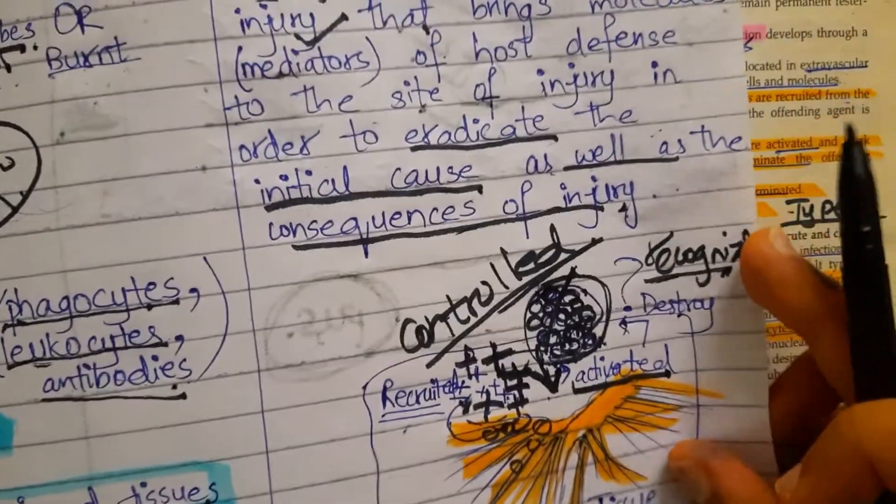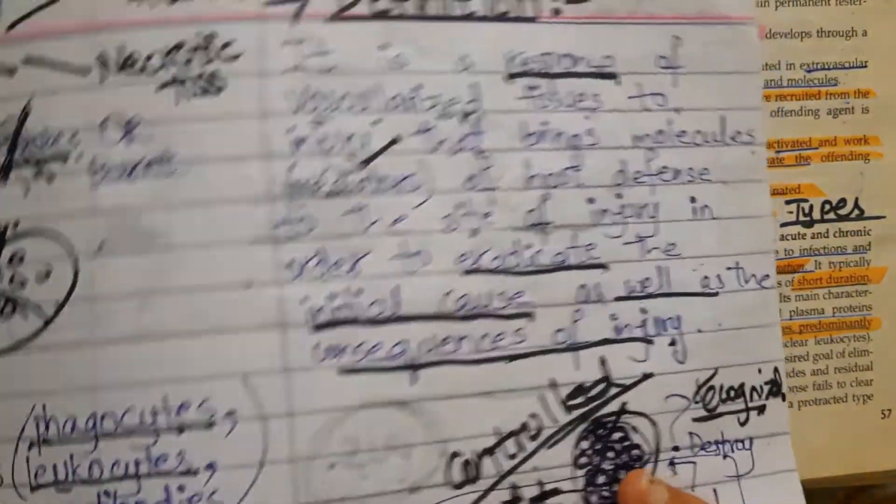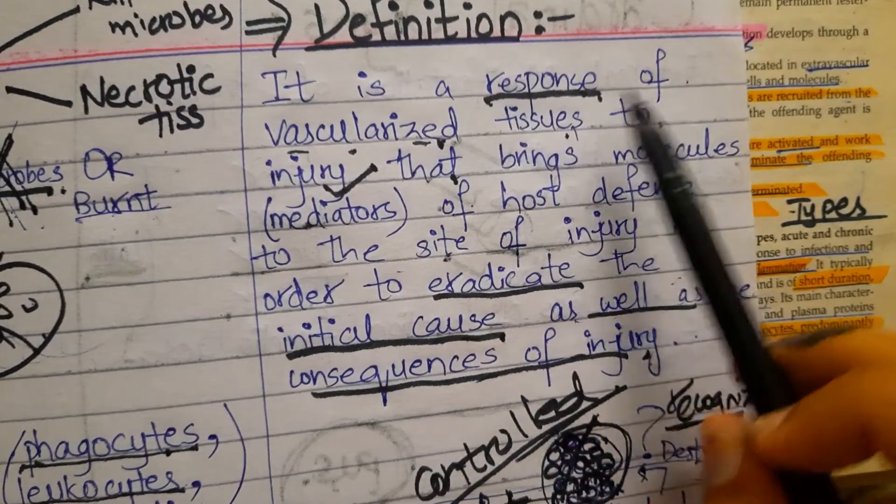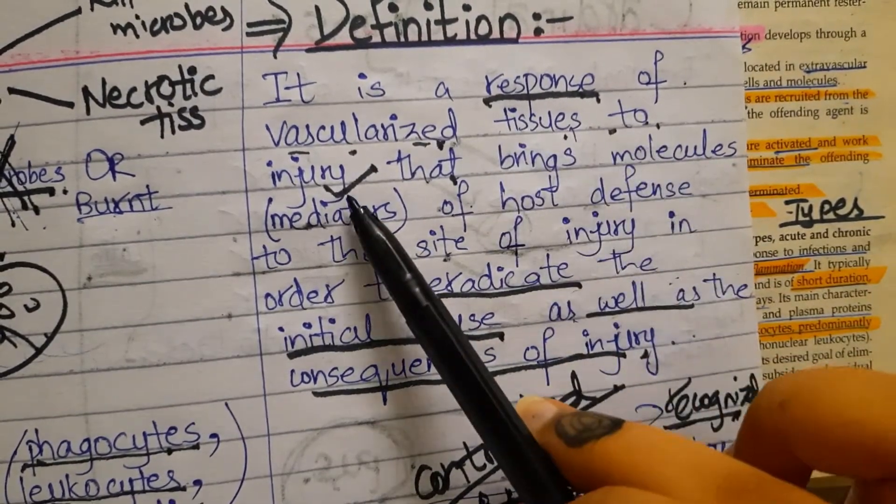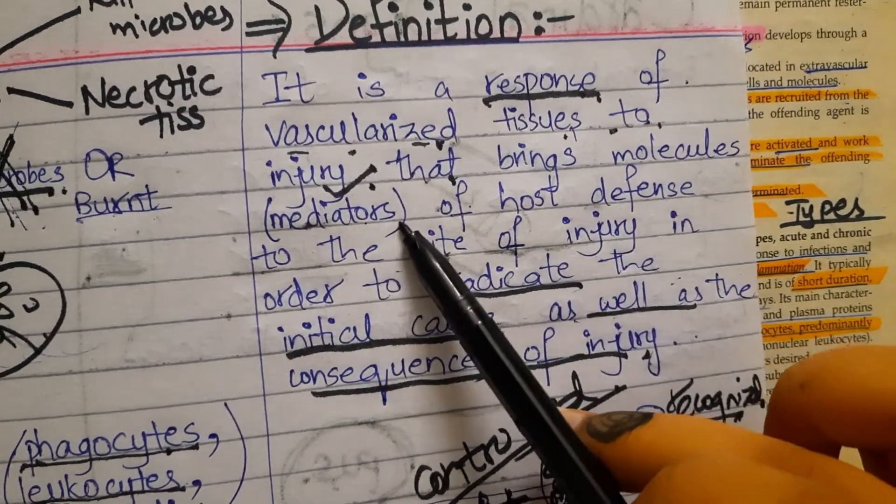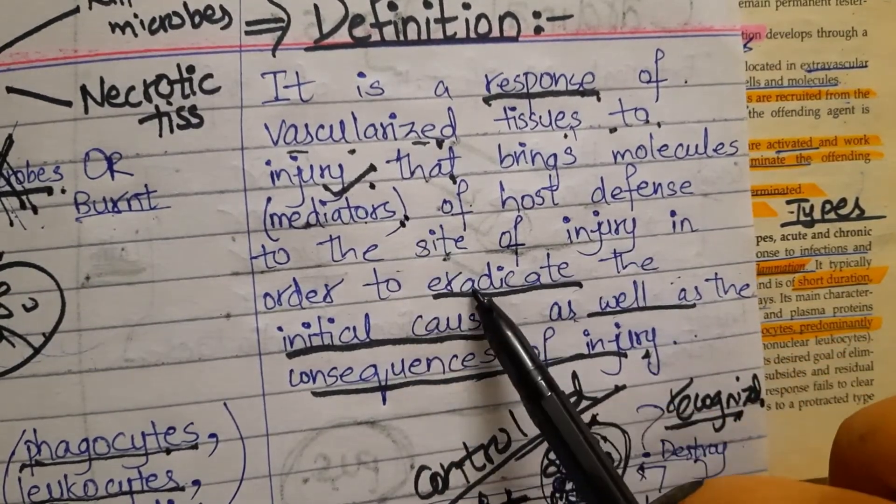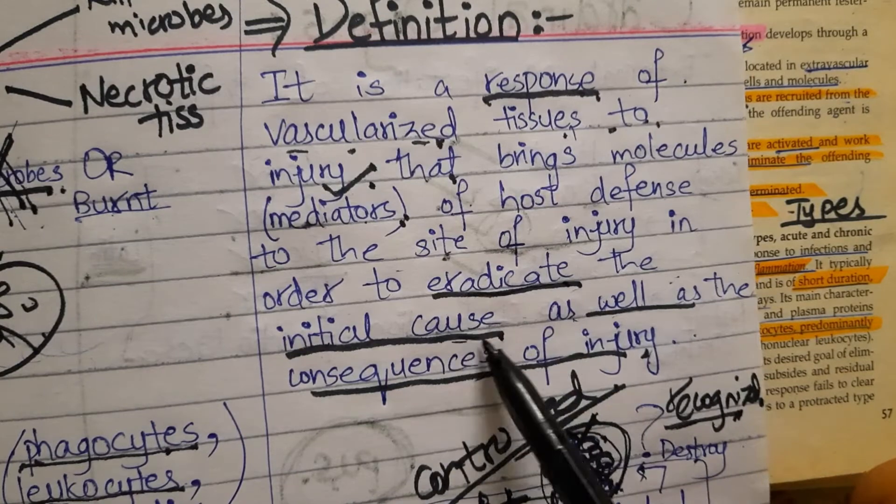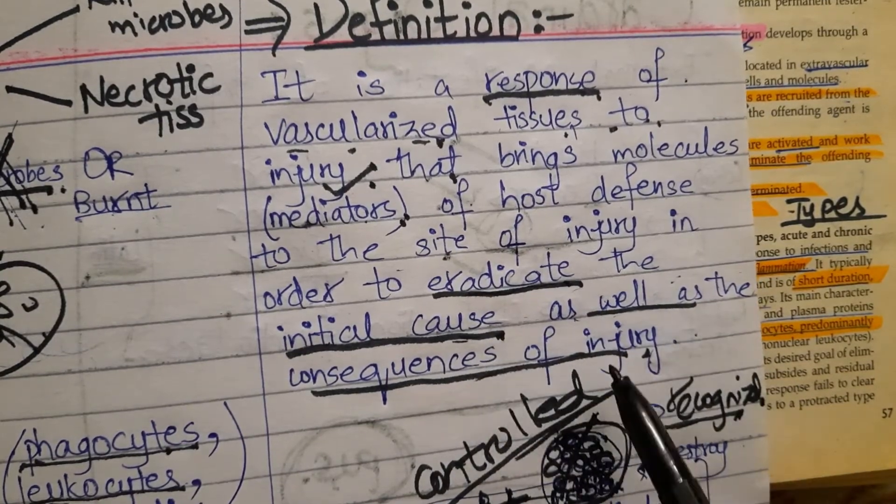So now you can easily define inflammation. This is the definition: it is a response of vascularized tissues to the injury by which mediators are released, and these mediators eradicate the initial cause as well as the consequences of injury.